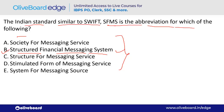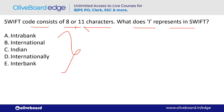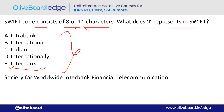SWIFT code consists of 8 or 11 characters. What does 'I' represent in SWIFT? I stands for 'Interbank' — option E. The full form is Society for Worldwide Interbank Financial Telecommunication.